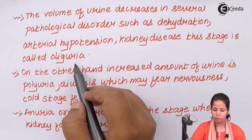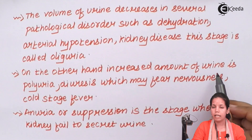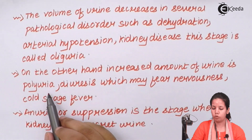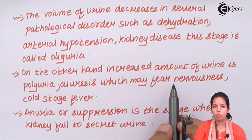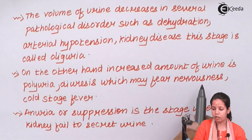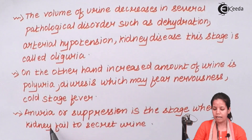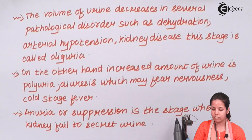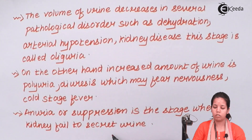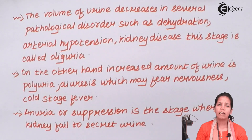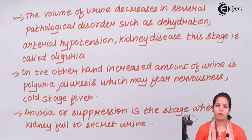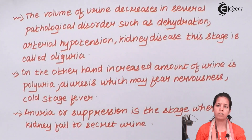This stage is called oligouria. On the other hand, increased or greater amount of urine is termed polyuria. Large amount of urine, or diuresis, may be due to fear, increased nervousness, or cold climatic conditions. Anuria, or suppression of urine, is the stage where the kidney basically fails to secrete the required amount of urine, which may ultimately lead to kidney failure. Other diseases include glucosuria, hemoglobinuria, and albuminuria. I hope students we are clear with this concept of what urine is and what its disorders could be. Thank you.